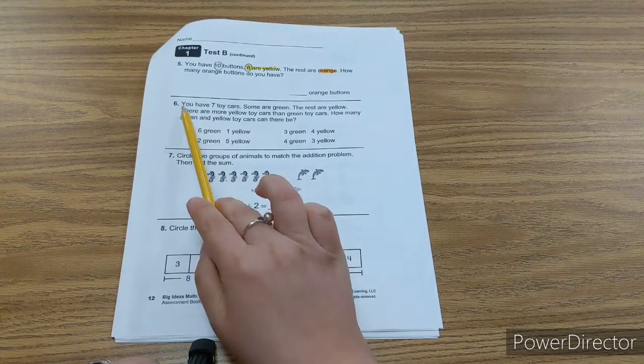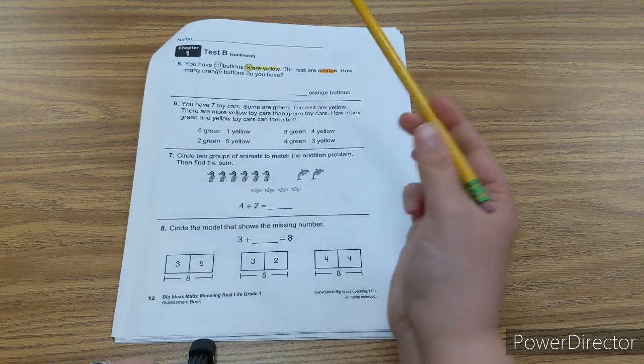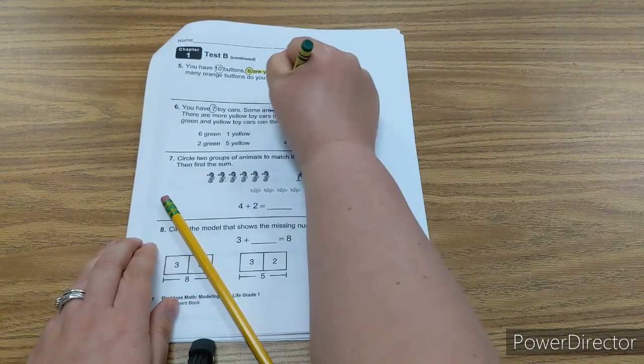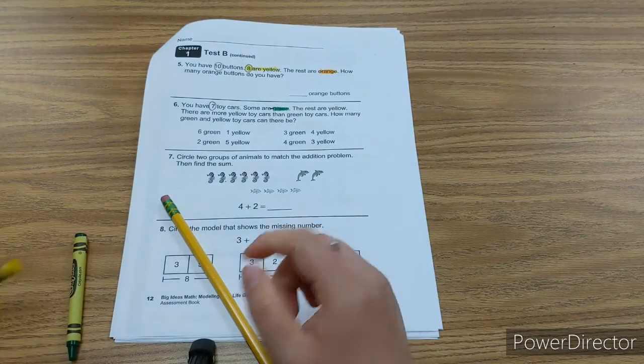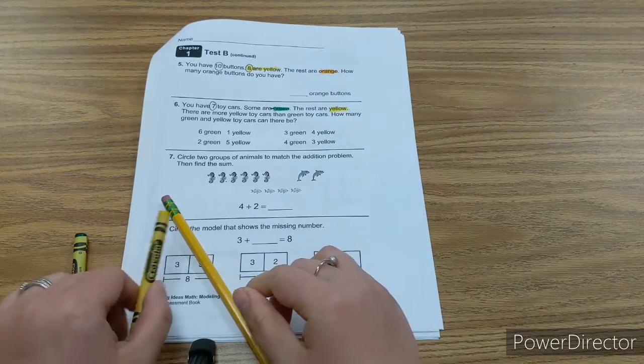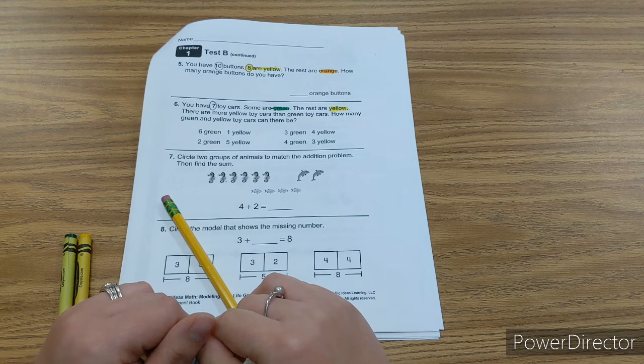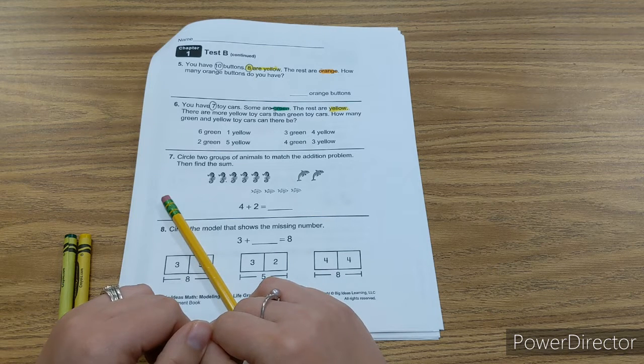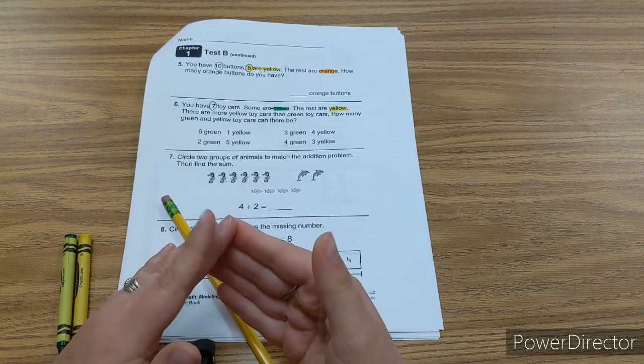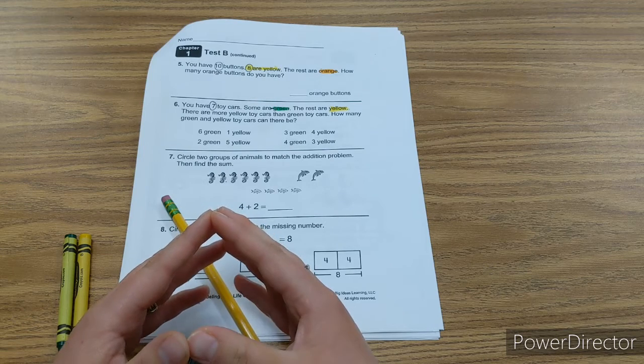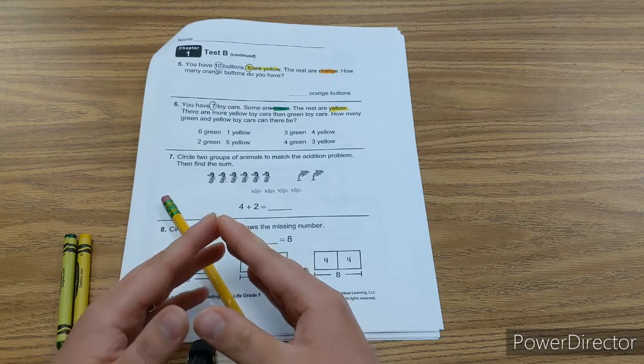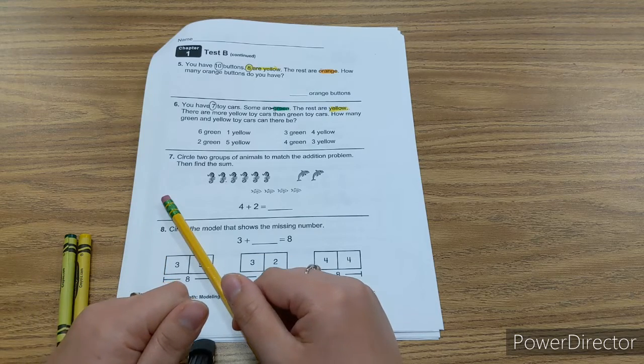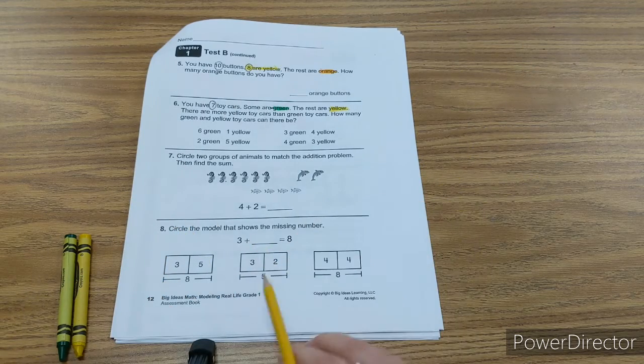Number six. You have seven toy cars. Seven, that's your important number. Some of them are green and the rest are yellow. There are more yellow cars than green cars. How many green and yellow cars can there be? So you want to figure out how many green cars and how many yellow cars you have, and you want there to be more green cars, so a bigger number for green. This one is going to be tricky. I want you to take some time and figure it out. There might be more than one answer.